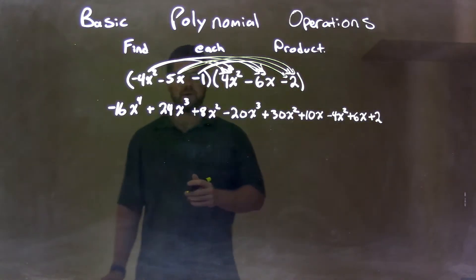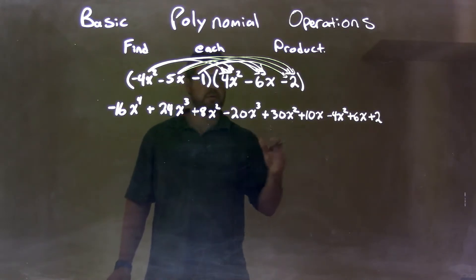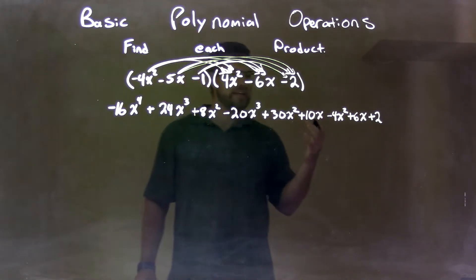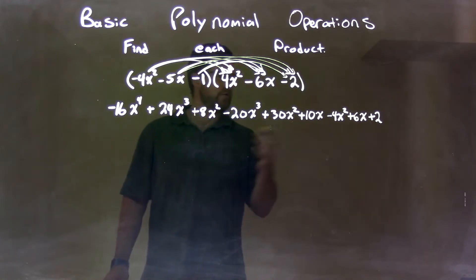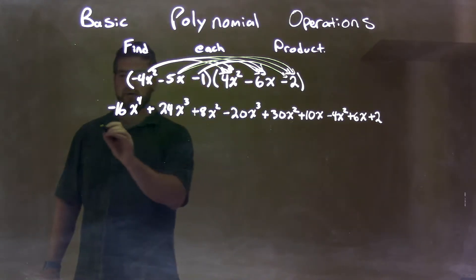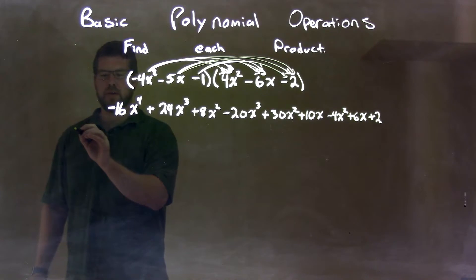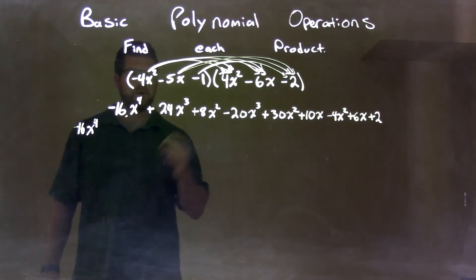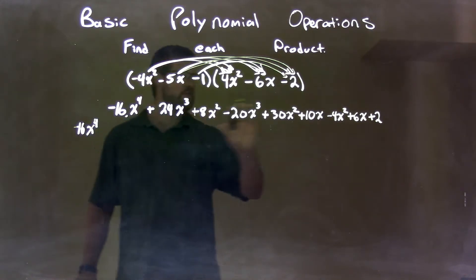So now, what we want to do is, depending on our comfort level, if you need some more time, I rearrange and put all my like terms next to each other. So I start with the fourth power. I have negative 16x to the fourth power. I put a little dot showing that I brought it down. That's the highest degree.